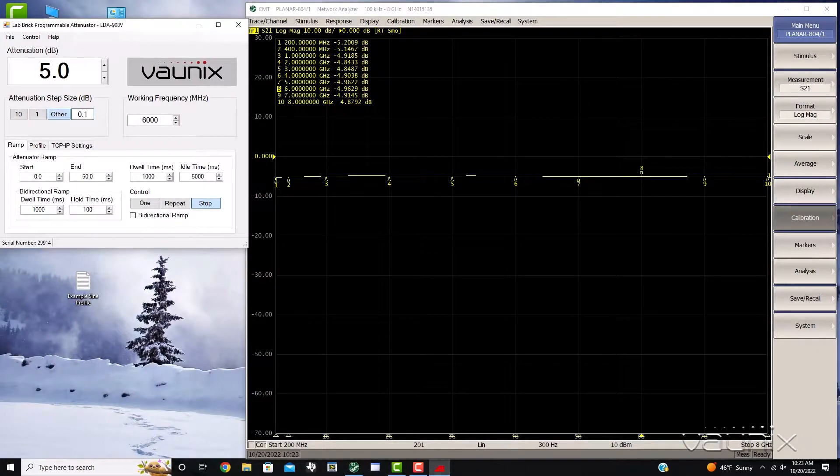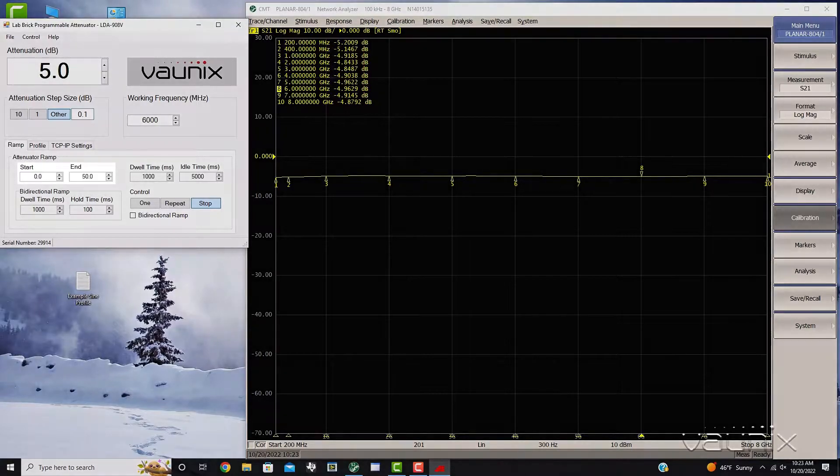The Labric attenuator will also automatically step through a range of attenuation values once you have specified starting and final attenuation levels, step size, dwell time, and time interval between repeating steps. The dwell time can be configured from 10 ms to 20 seconds per step.